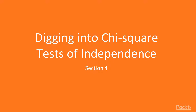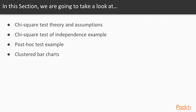Welcome to lesson four. In this lesson, we're going to talk about the chi-square test of independence. Specifically, we're going to look at the chi-square test theory and its assumptions. We're then going to go through an example of how to do a chi-square test, followed by an example of how to do a post-hoc test for the chi-square test of independence, so that you know exactly where differences lie. Finally, we're going to show how to visually represent the results by creating clustered bar charts.